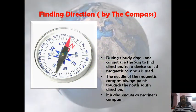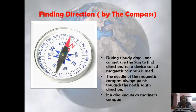Now suppose there is no sun and you cannot see the sky due to cloud cover — then you can use a device called a magnetic compass. The needle of the magnetic compass always points towards the north-south direction. It is also known as a mariner's compass because it is used by the captains of ships.